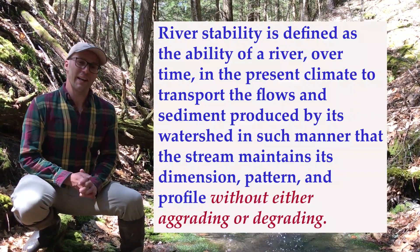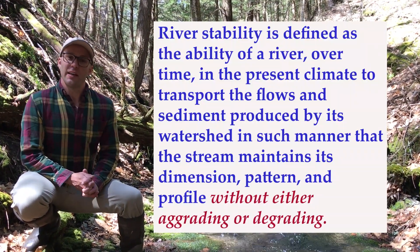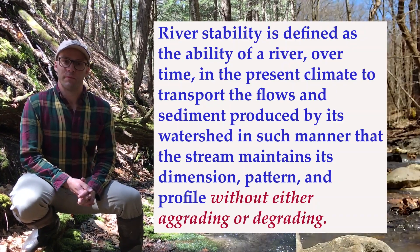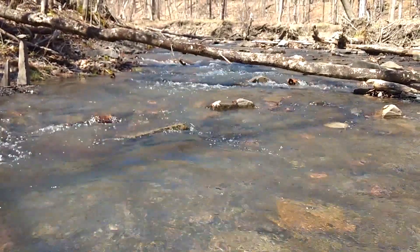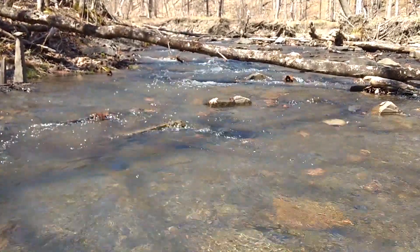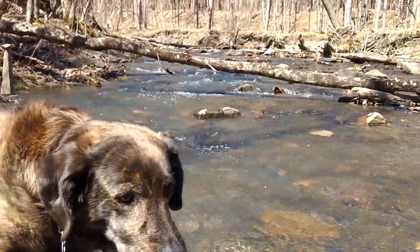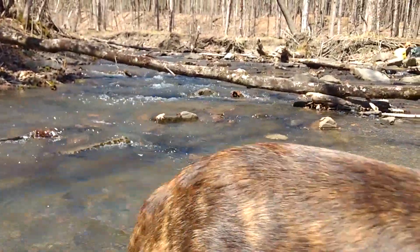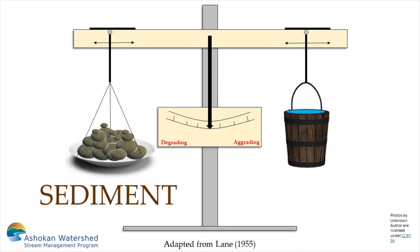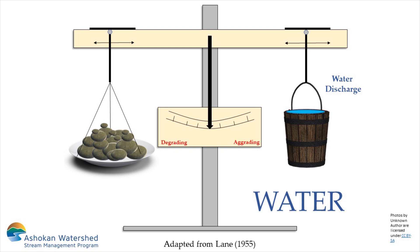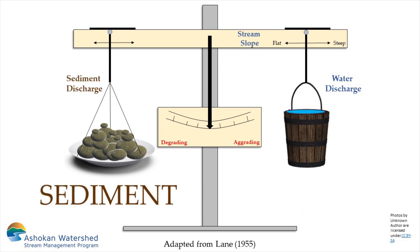What a stable stream can't do is be either aggrading or degrading. Aggradation and degradation are both the result of an imbalance between the amount of water and the amount of sediment being delivered to the channel from the watershed. You can think of this relationship like a scale with water on one side and sediment on the other. On the water side, the amount of discharge and the slope of the channel both have an influence. On the sediment side, the total amount of sediment and the average size of the sediment particle are both important.